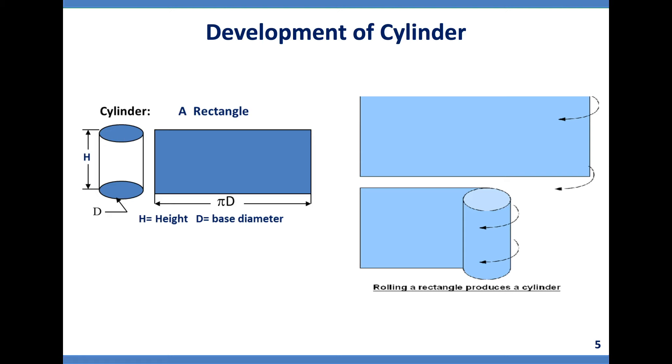Welcome to the next problem: development of cylinder. Here you can see this is the cylinder which has got top surface, bottom surface, and the vertical height. Top and bottom are circles having diameter D and height H.